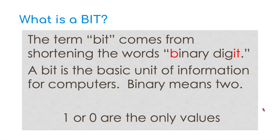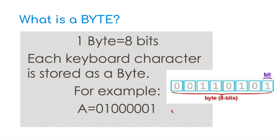Just to recap on a couple of terms used in this video: a bit — the term comes from a shortened version of 'binary digit'. A bit is the basic unit of information for computers; binary means two, so it's either a 1 or a 0 value. A byte is eight bits joined together — a string of eight bits equals a byte. Each keyboard character is stored as a byte. For example, the letter A is stored as 01000001 — more about that when we cover ASCII later.